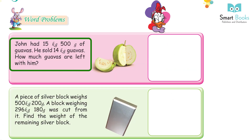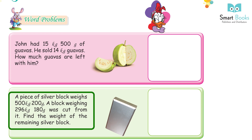Word problem: John had 15 kg 500 g of guavas. He sold 14 kg. How much guava is left? Answer: 1 kg 500 g. A piece of silver block weighs 500 kg 200 g. A block weighing 296 kg 180 g was cut from it. Find the weight of the remaining silver block. Answer: 204 kg 20 g.